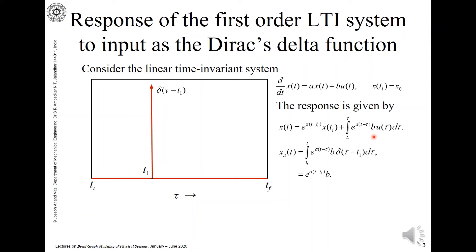The second part is given like this: x_u, that is the response on account of the input u, is equal to integral from ti to t e raised to a times t minus tau b delta tau minus t1 d tau.